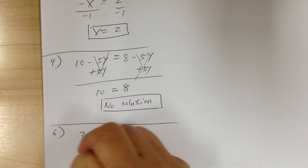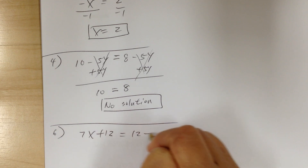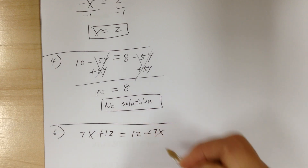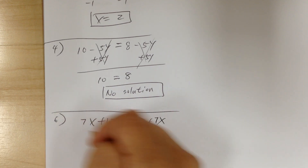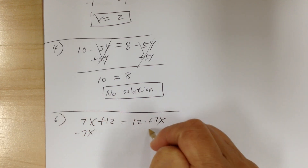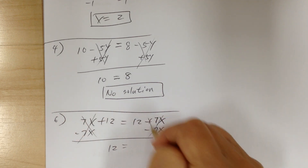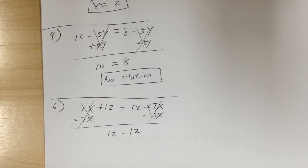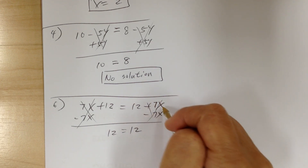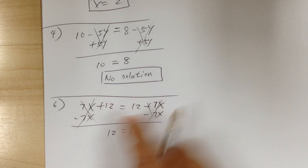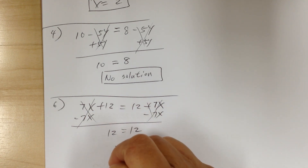Number 6. You have 7x plus 12 equal to 12 plus 7x. Again, let's consolidate the variable first, so that's minus 7x on both sides. The 7x terms cancel out, so you get 12 equal to 12. So this is always true — no matter what x is equal to, this is always going to be true. In this case, this is the identity.